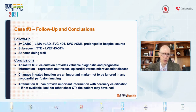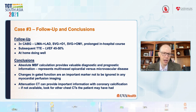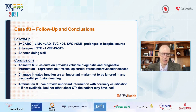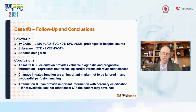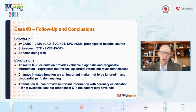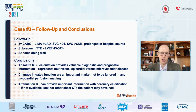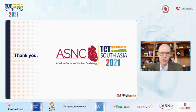Conclusions from case three: Absolute myocardial blood flow provides valuable diagnostic and prognostic information and can help identify multi-vessel epicardial disease versus microvascular disease. Changes in gated function are an important marker not to be ignored in any myocardial perfusion imaging, including SPECT and transthoracic echocardiography. Attenuation CT can provide important information with coronary calcification — if the patient doesn't have a CT as part of your study, there is a high likelihood they've had a chest CT for something else, and coronary calcifications can help identify patients at higher risk for balanced ischemia. Thank you very much.